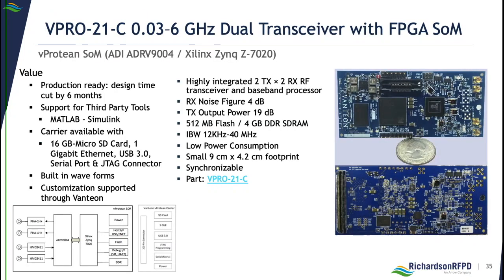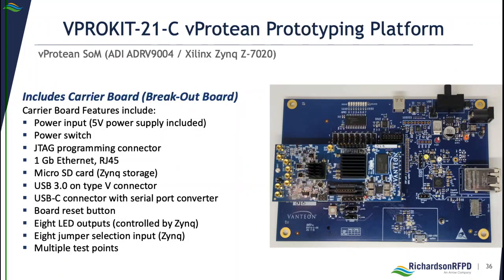The V-Protein is Vantion Wireless Solutions' second software-defined radio platform, based on the Analog Devices ADRV9004 highly integrated wideband RF transceiver and the Xilinx Zynq 7020 programmable SoC. The V-Protein SDR has a custom RF front end that is highly flexible, allowing it to be software-configured for the full 30 MHz to 6 GHz frequency range and 12 kHz to 40 MHz of instantaneous bandwidth. This makes V-Protein perfect for signal intelligence and multiband processing applications. It also has a carrier board that makes it easy to evaluate and start software/algorithm development while the hardware team is finishing up their design.